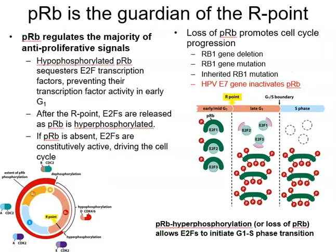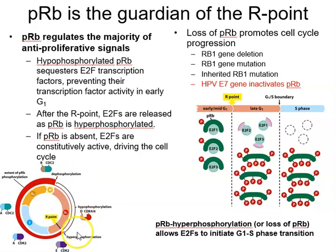As a reminder, the RB1 gene product is the PRB protein, which is guardian of the R point. PRB holds onto E2F transcription factors, which drive S phase gene expression. As a cell progresses through G1, growth factor signalling induces Cyclin D and Cyclin E; Cyclin E with its CDK partner CDK2 hyperphosphorylates PRB, releasing E2F, which drives S phase genes and allows the cell to progress through the cell cycle.